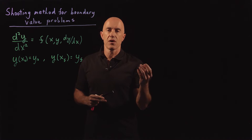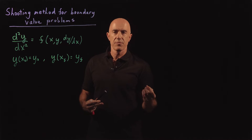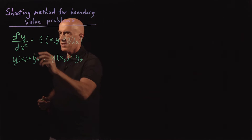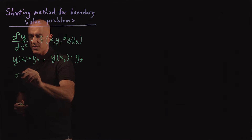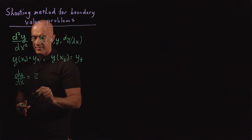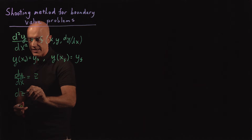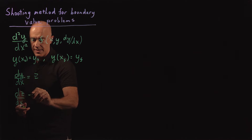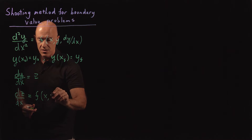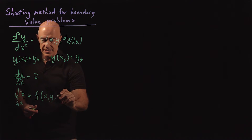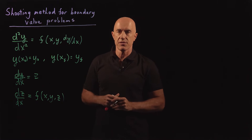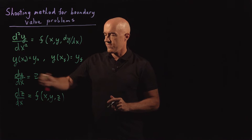If we were going to use ODE45 to solve this problem, we would write it as a system of first-order differential equations. We break it up into two first-order equations: dy/dx = z (a new variable), and dz/dx = d²y/dx², which is a function of x, y, and dy/dx — that is, x, y, and z. So we write our second-order differential equation as a system of first-order equations.